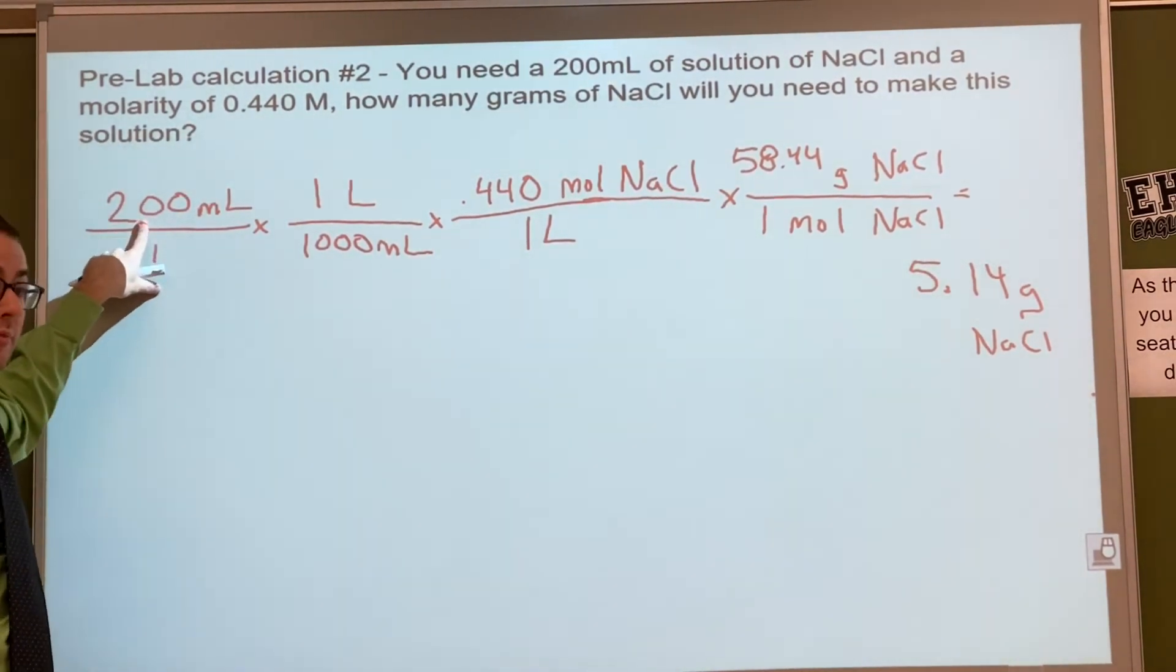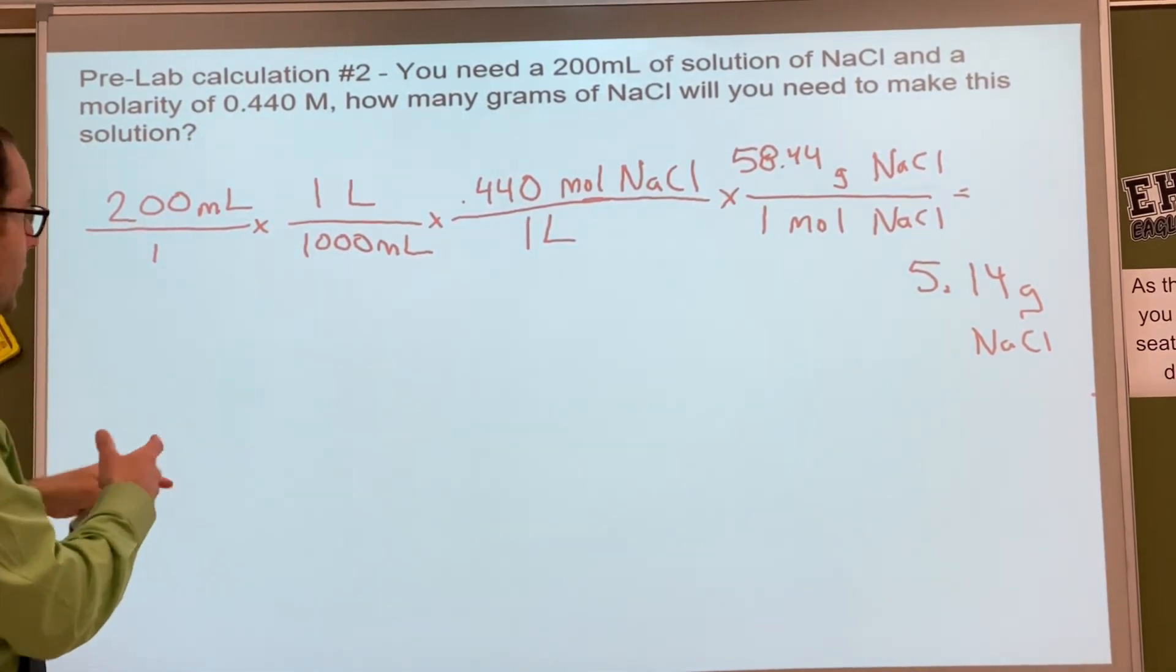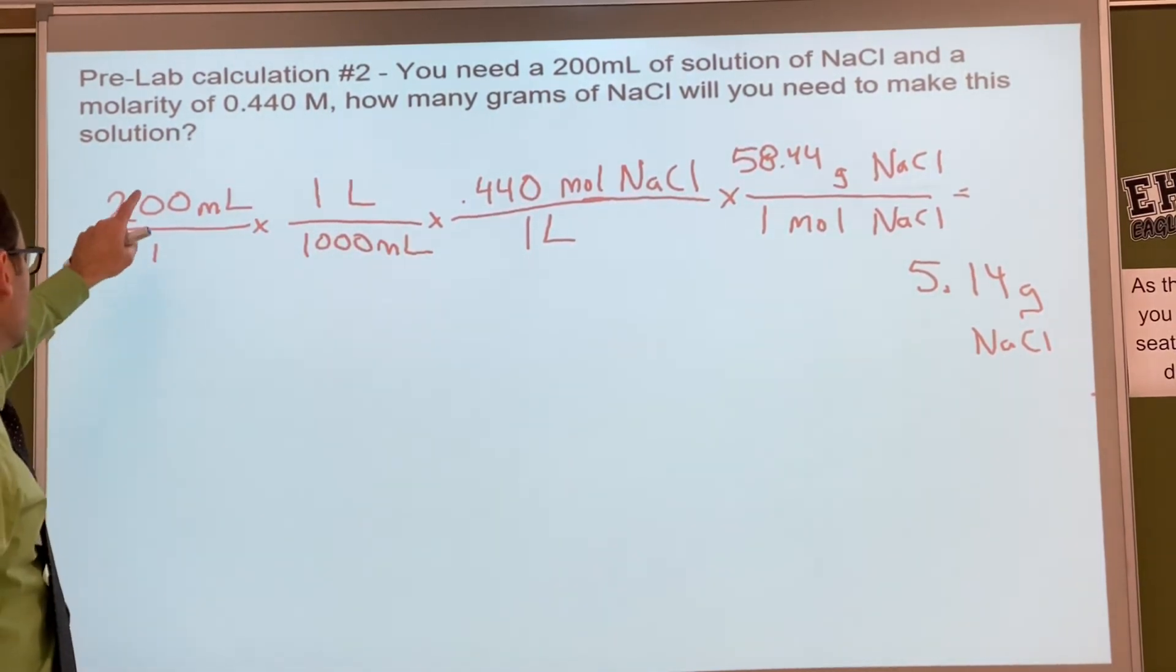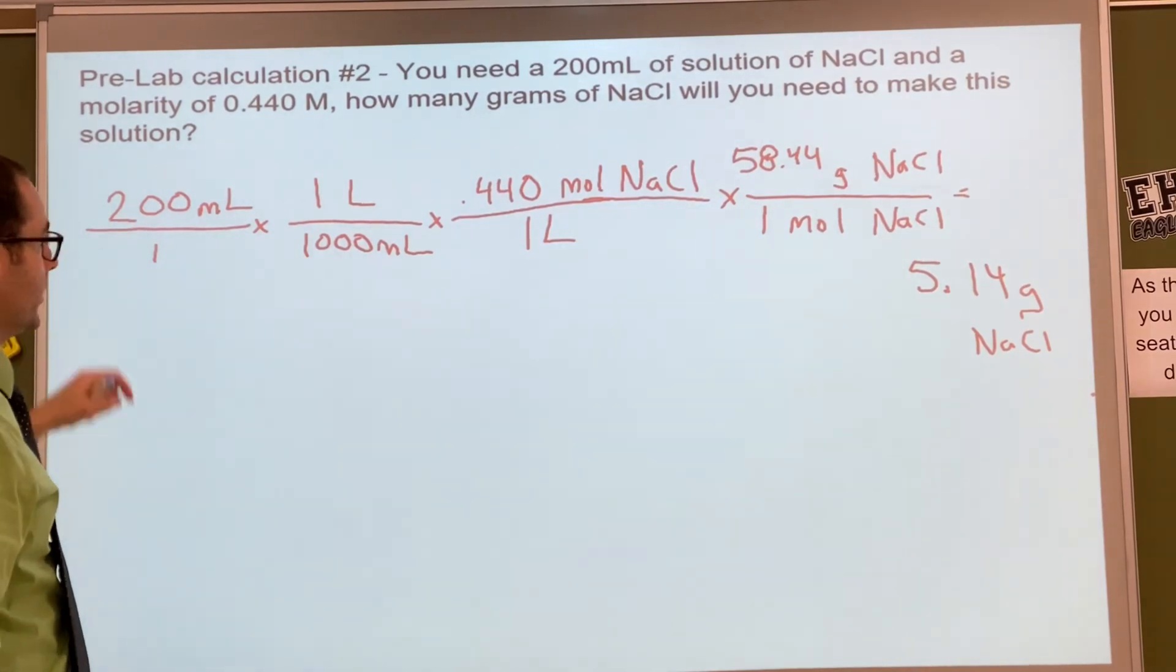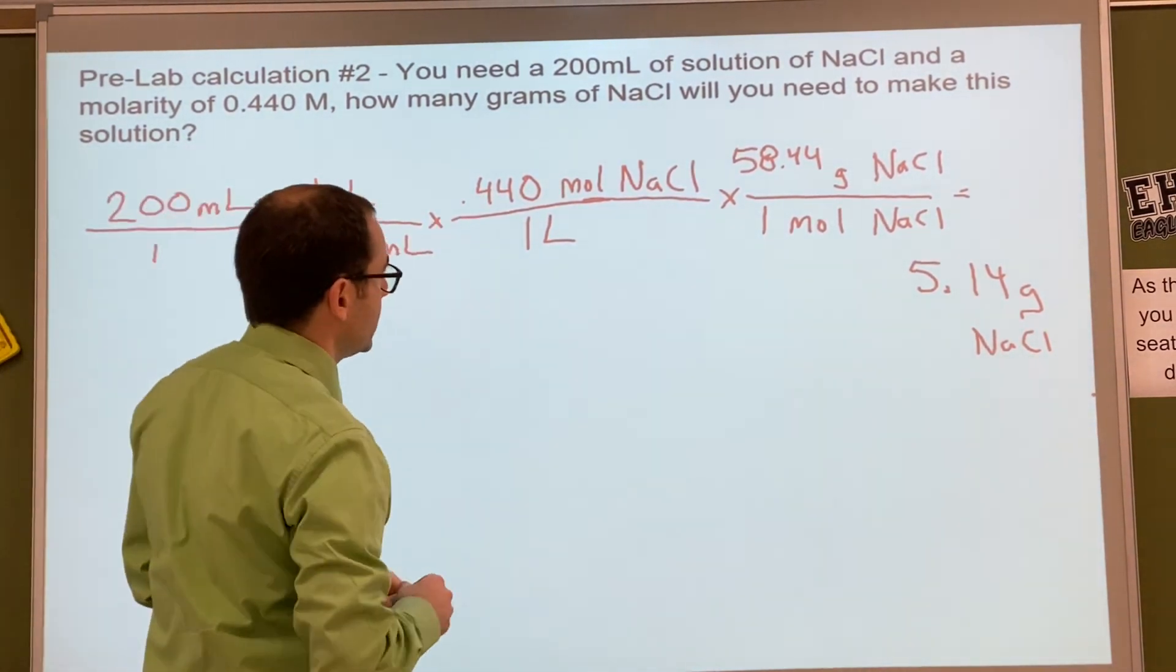We're only making 200 milliliters, right? Before, in the last problem, we were making two liters of it. So this is going to be much smaller. When you guys are making this, yours might even be smaller than that, because you're probably going to have 100 milliliters. So just see if it makes sense. That's good. Any questions with that?